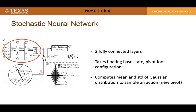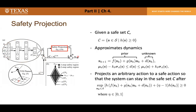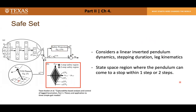The safety projection module takes the sum of TBR and neural network outputs and projects it into the safe action set. It assumes a safe set C is given, approximates its dynamics using Gaussian Process Regression, and solves an optimization problem using a Control Barrier Function to keep the system in safe set C after applying the action. For the safe set computation I borrowed the concept of capturability, representing state-space regions where the pendulum can come to a stop within one or two steps.